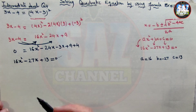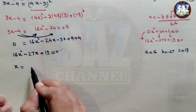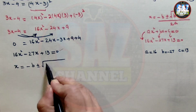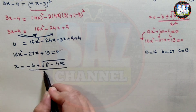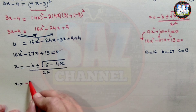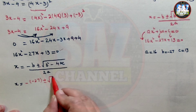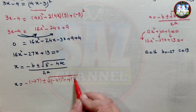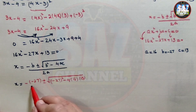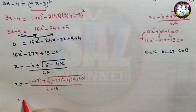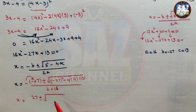Now we substitute these values into the quadratic formula: x equals minus b plus or minus the square root of b squared minus 4ac, all divided by 2a. This gives x equals minus(minus 27) plus or minus the square root of (minus 27) squared minus 4 times 16 times 13, divided by 2 times 16. Simplifying: x equals 27 plus or minus the square root of 729 minus 832, all over 32.